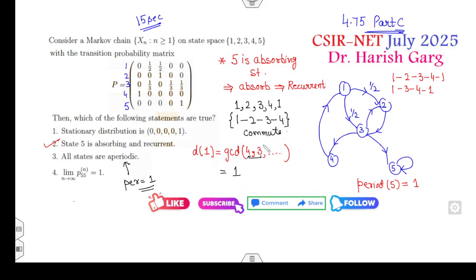Now because they commute to each other, that means the period of 2, period of 3, period of 4 all are also 1. So all these four states have a period 1, five state has also the period 1. So yes, all the states are my aperiodic.